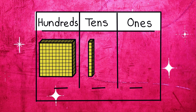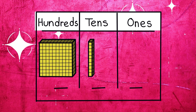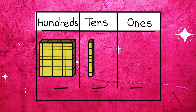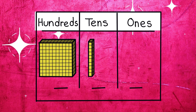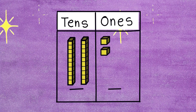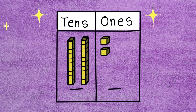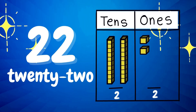Next number. It has three digits: eleven tenths and zero ones. A hundred and ten! Next number. It has two digits: two tenths and two ones. It is number twenty-two!